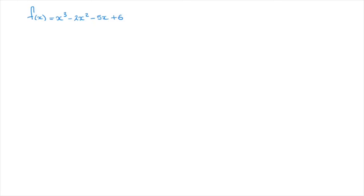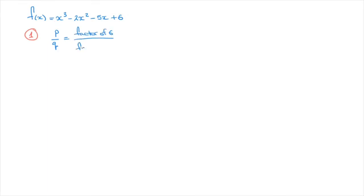To do that, I follow two steps. Step 1 is to use the rational root theorem to list all of the potential roots, or zeros, of this polynomial. The rational root theorem tells us that any rational root must be of the form p over q — a rational number — such that p is a factor of the constant term, which is 6 here, and q is a factor of the leading coefficient, which in this case is 1. So I'll just write: factor of 6 over factor of 1.